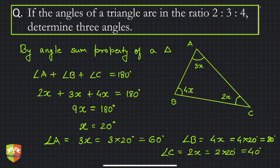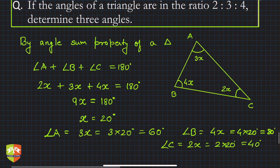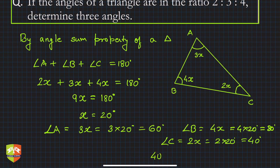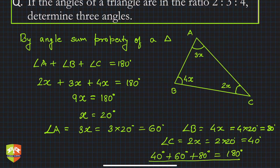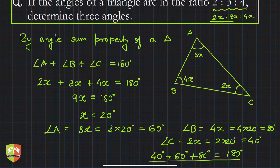And angle C is 2x = 2 × 20 = 40 degrees. The three angles are 40°, 60°, and 80°. You can verify: 40 + 60 + 80 = 180 degrees. Also, the ratio 40:60:80 simplifies to 2:3:4 — correct! The key learning is: for ratio problems, represent the angles as 2x, 3x, 4x.